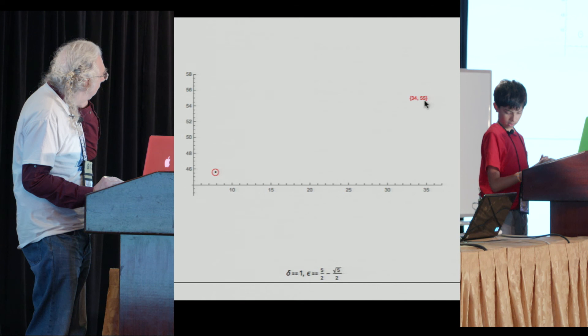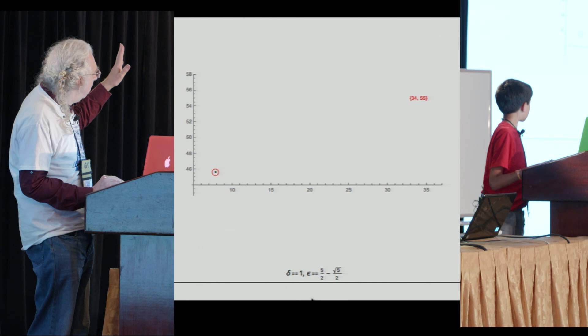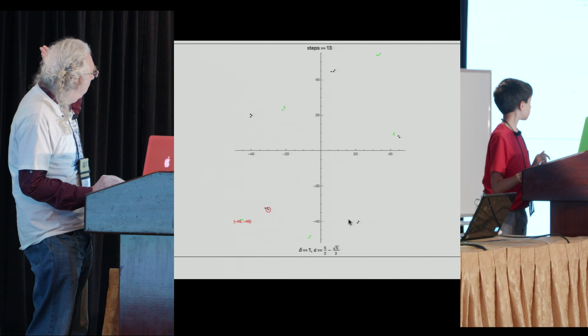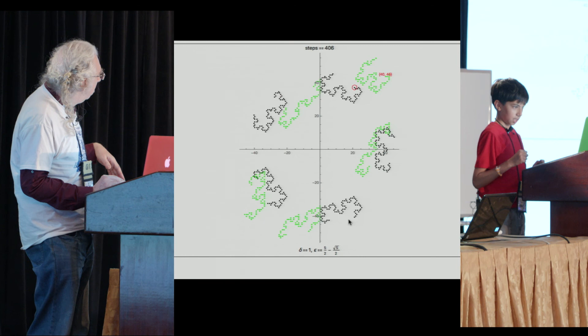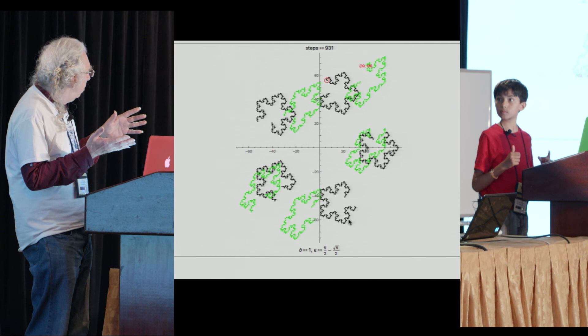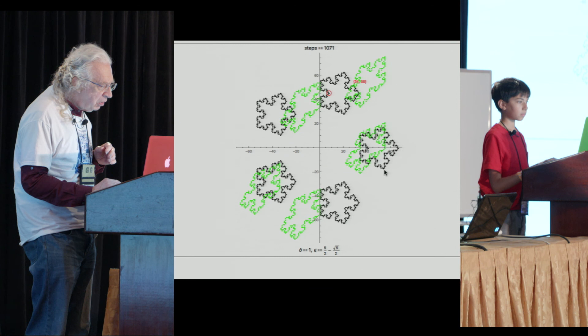Now let's do the Fibonacci one — 34 and 55, which are Fib 9 and Fib 10. The multipliers are basically related to the golden ratio. Let it rip. And now it appears to be going around in a pentagon. But in fact, what it's going to really do is draw five fractal pentagrams. This is just one simple recurrence which, under normal circumstances, makes circles.